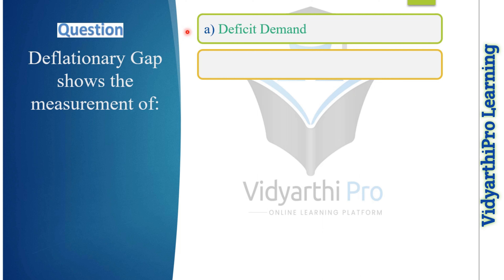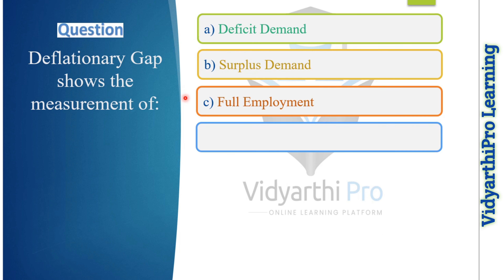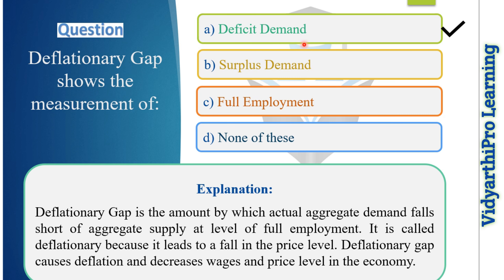Our next question: deflationary gap shows the measurement of which of the following? In Hindi: 'Apas fiti antaral kiske map ko darshata hai?' Options: deficit demand, surplus demand, full employment, or none of these. The correct answer is option A, deficit demand. The deflationary gap is the amount by which actual aggregate demand falls short of aggregate supply at the level of full employment. It leads to a fall in price level and causes deflation, decreasing wages and price level in the economy.